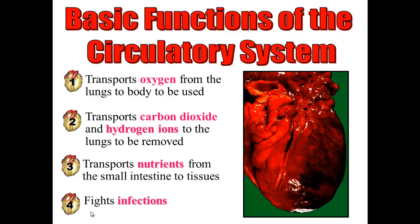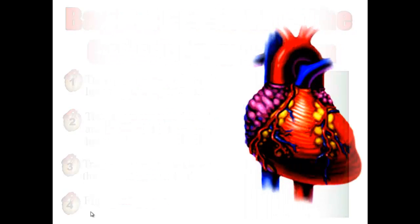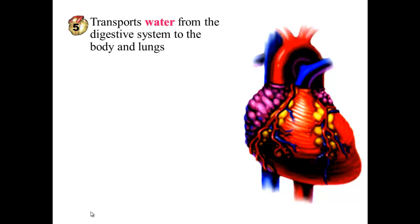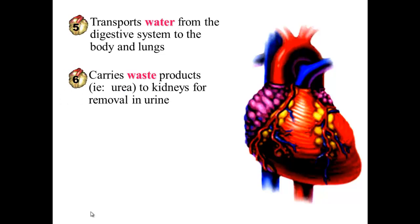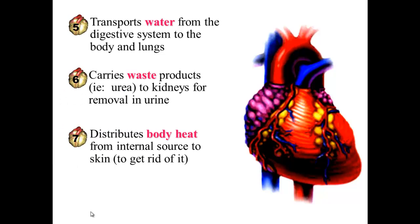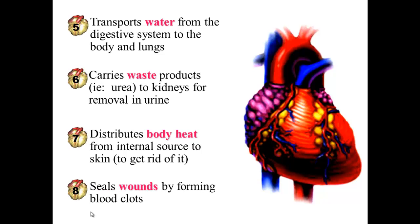The circulatory system also fights infections that enter your bloodstream and your body. It transports water from the digestive system to the body and the lungs. It carries waste products to the kidneys so they can be removed in our urine. And it distributes body heat when we're too warm from the internal part of our body to our skin, which is why you get all flushed when you are exercising.